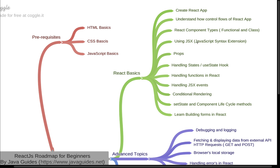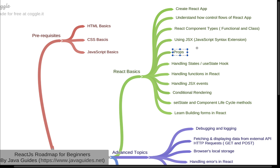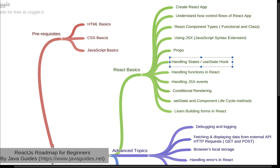Once you know how to use JSX in React, learn props. Props stands for properties, and we use props to pass data from one component to another — specifically from a parent component to a child component. After understanding props, learn state in React. State is a built-in object in React components; in class components you can use the state object to store, read, and update values.